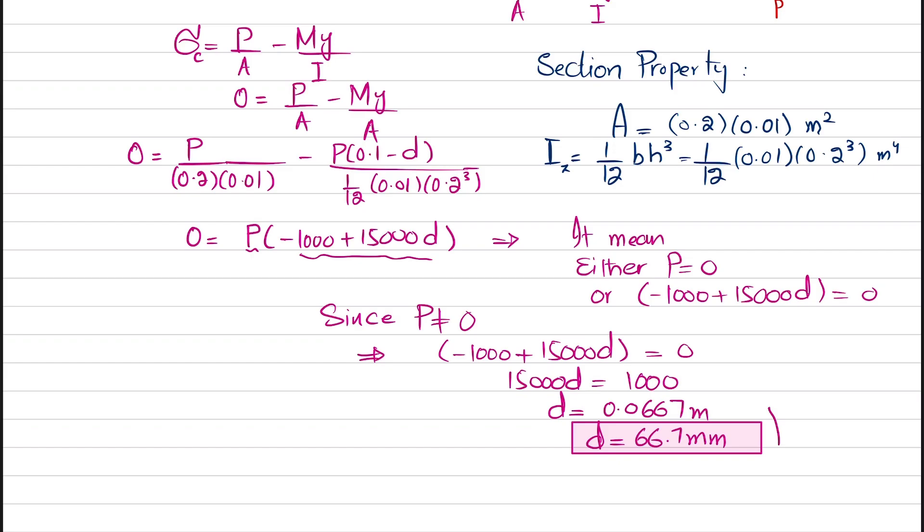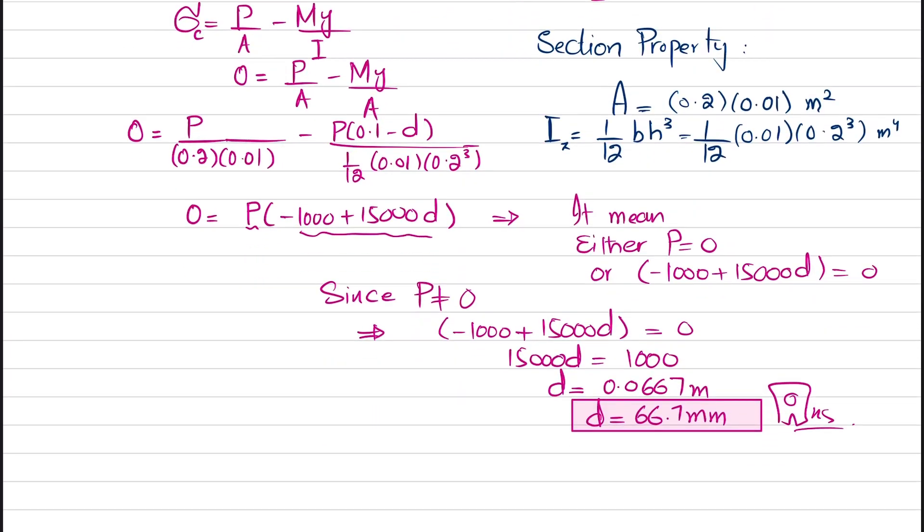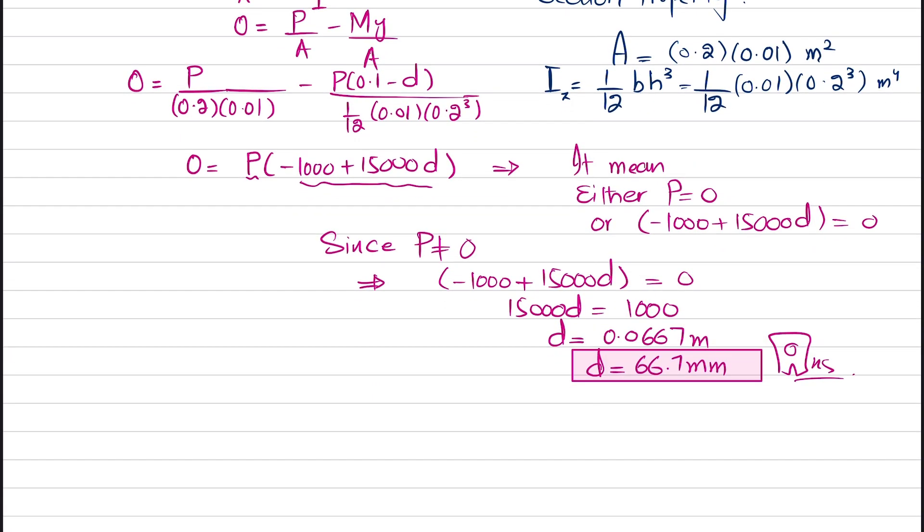This is the shortest possible distance from this edge. If you select D as 66.7 millimeters and apply load P, it will produce no compressive stress in this plate.